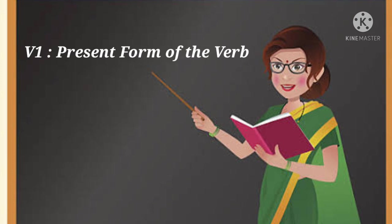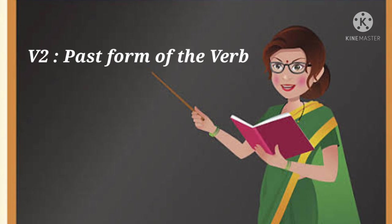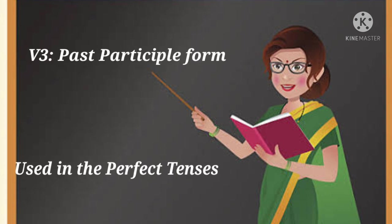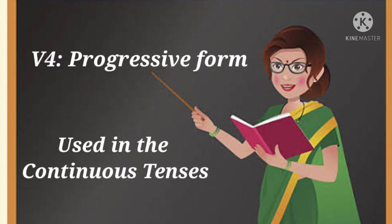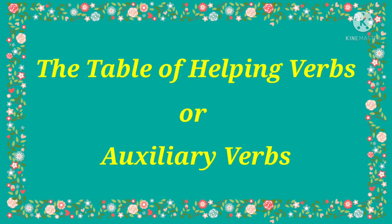We also understand that verbs can be divided into four types according to tenses: V1 is the present form of the verb, V2 is the past form, V3 is the past participle form used in the perfect tense, and V4 is the progressive form used in the continuous tense. Let us see the table of helping verbs or auxiliary verbs.